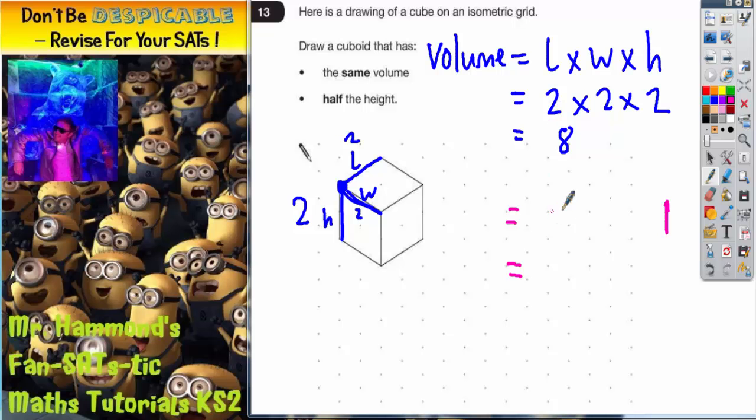So if we keep the length at 2 and the height at 1 to make it half the height, what would the width have to be to keep the answer at 8? Because we still want an answer of 8.